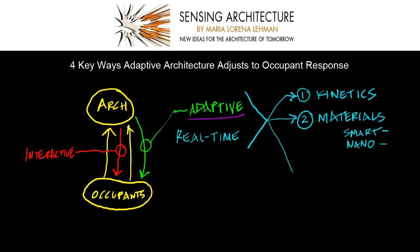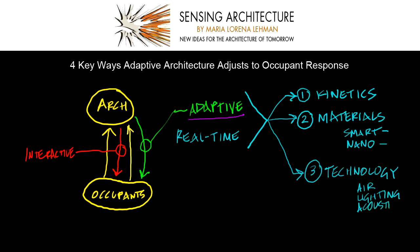The third way adaptive architecture can adjust to occupant response is through technological changes. Air quality can adjust through HVAC systems, lighting can adjust through fixtures, and acoustics can be adjusted as well. So technology within a built environment can help architecture adjust its environmental stimuli for occupant need.